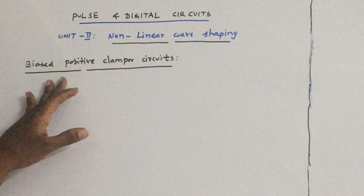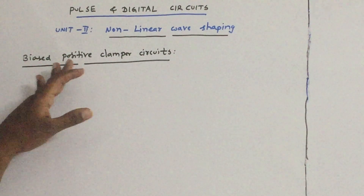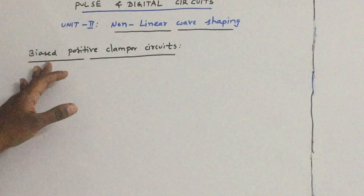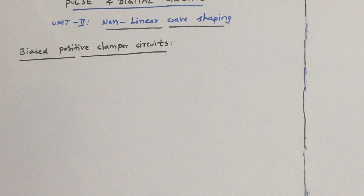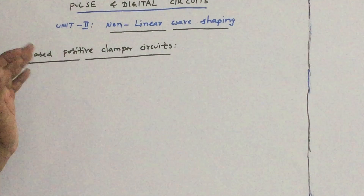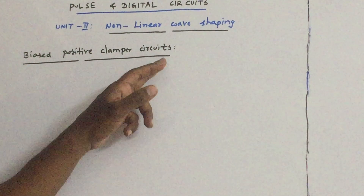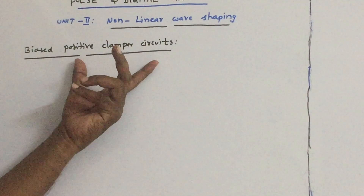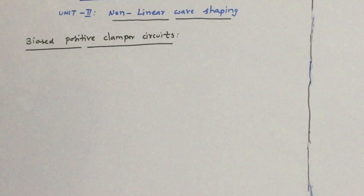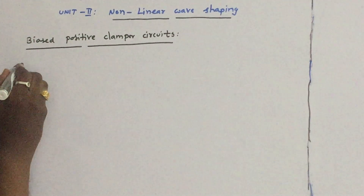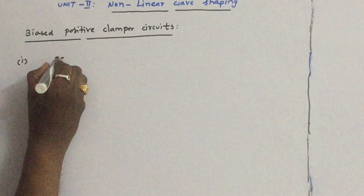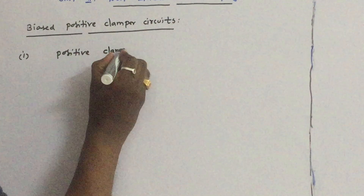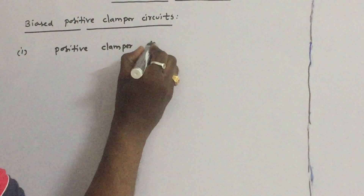In the previous class, we discussed biased negative clamper circuits. In this session, we will discuss biased positive clamper circuits. Before going to biased positive clamper circuits, let us first revise the positive clamper circuit. Later, we will provide biasing to this circuit.